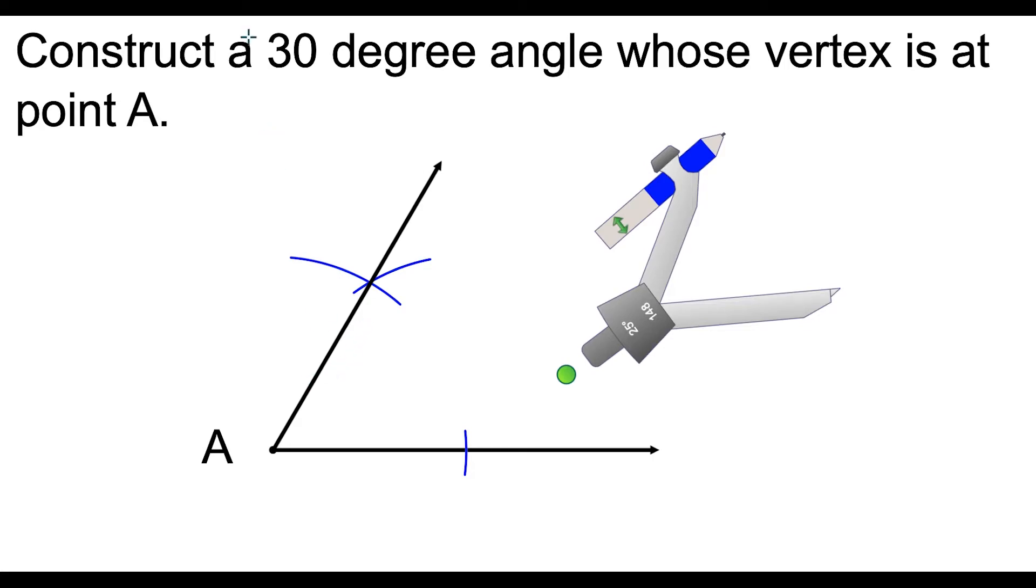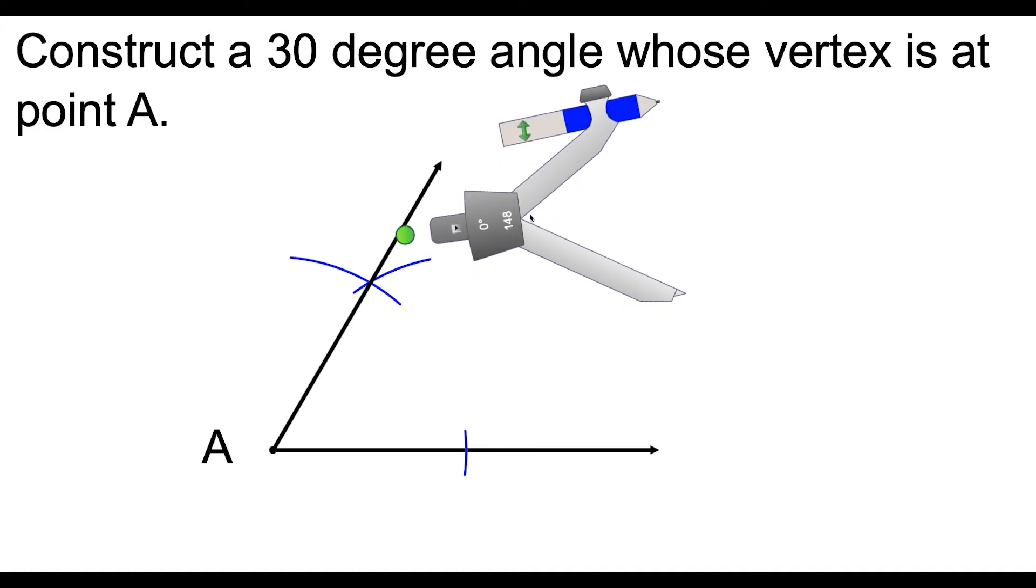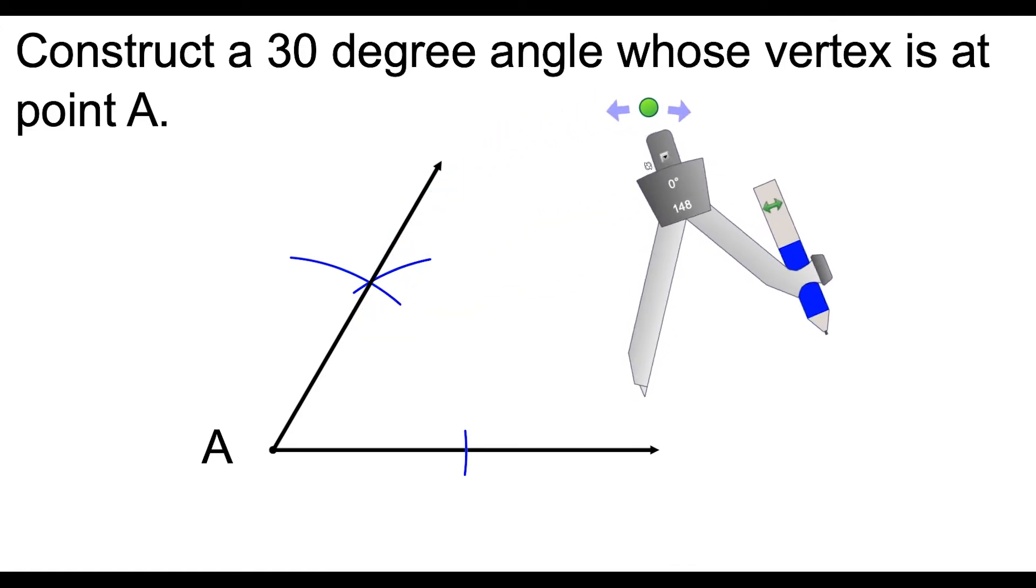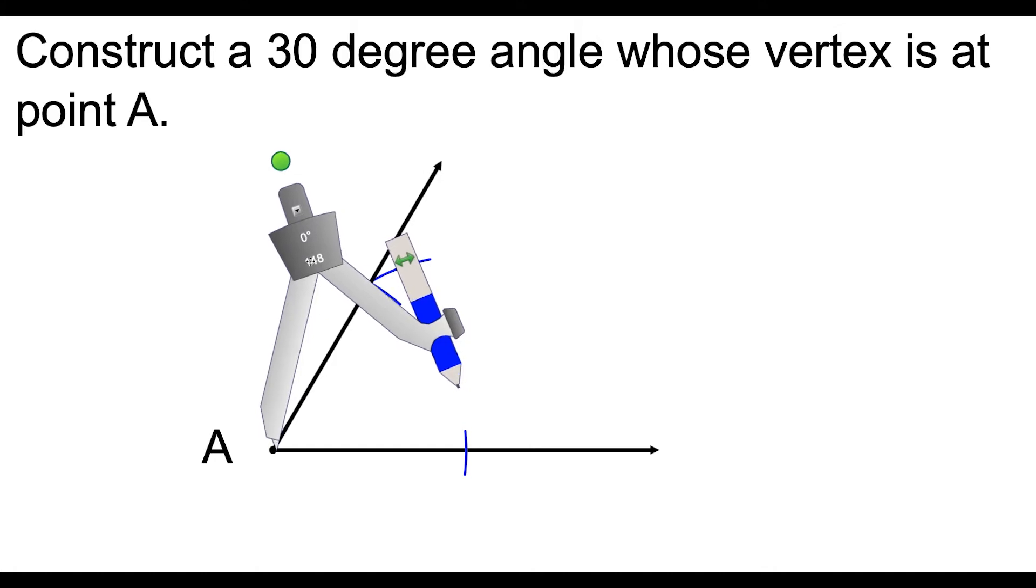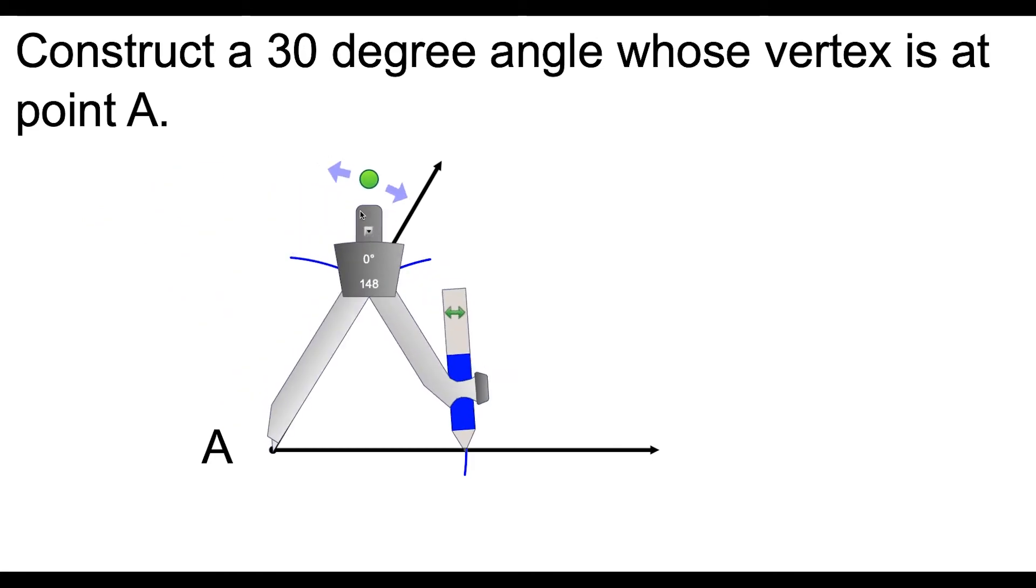So to cut that angle in half, what we're going to do is we're going to take the compass and we're going to do the angle bisector construction for angle A. So what I could do here is I could swing the arc so that it hits both of these lines, but we already did that.